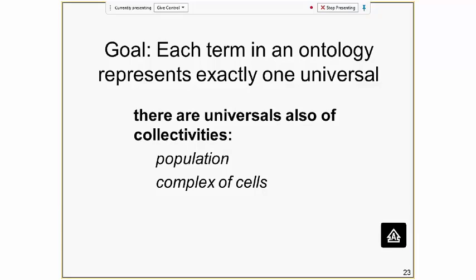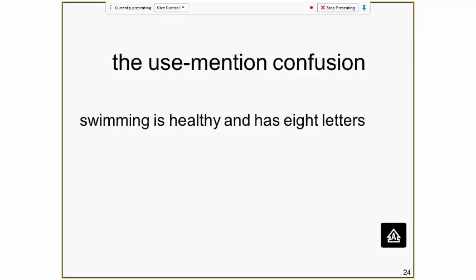Each term in the ontology represents exactly one universal or one defined class of some sort. One reason why 'pet' is probably not a good universal term is because it seems to designate multiple universals — there are cats which are pets, dogs which are pets, snakes which are pets, and so on.